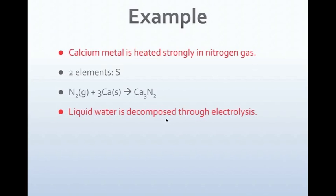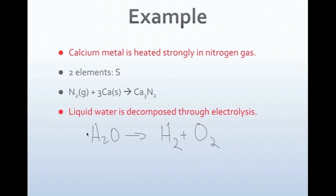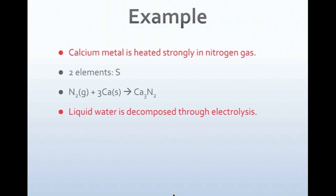Last example: liquid water is decomposed through electrolysis. We start with H2O and break it into its parts — hydrogen and oxygen. Both are diatomic, so we write H2 and O2. We have 1 oxygen on the left and 2 on the right, so we put a 2 in front of H2O, changing oxygen to 2 and hydrogen to 4. Then we balance hydrogen by putting a coefficient of 2 in front of H2. The equation is now balanced — this is our decomposition reaction.